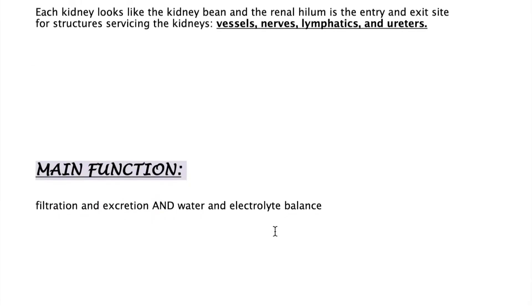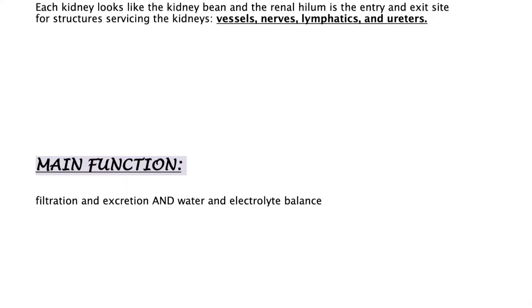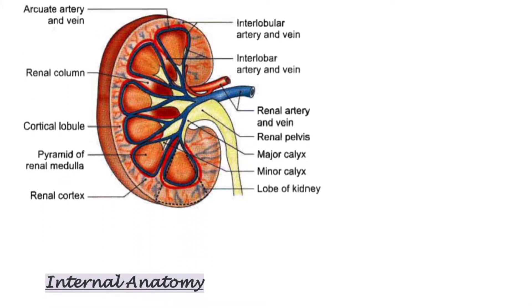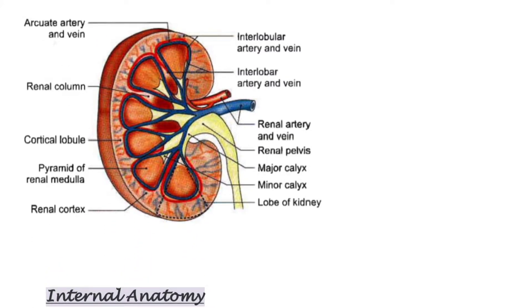The most important functions are filtration and excretion, and water and electrolyte balance. Coming to the internal anatomy: there is an outer region called the renal cortex and an inner region called the medulla. As the name suggests, the medulla is in the middle, and all of the pyramids and columns are present in the medulla.